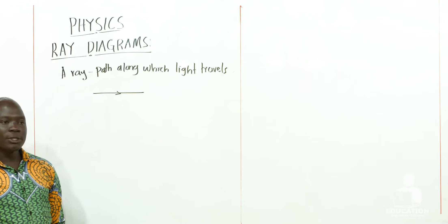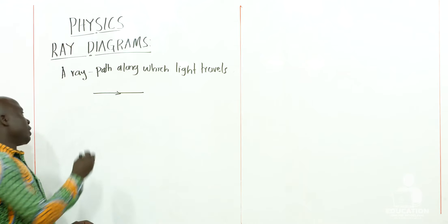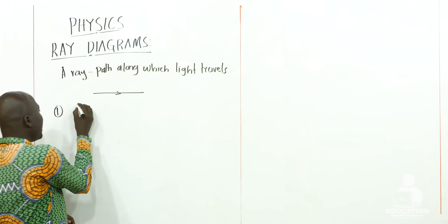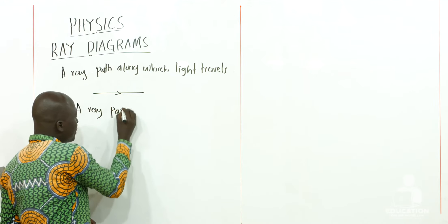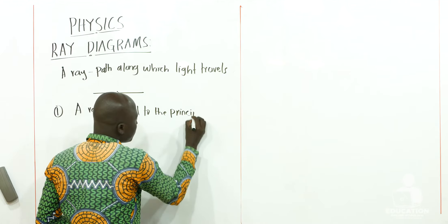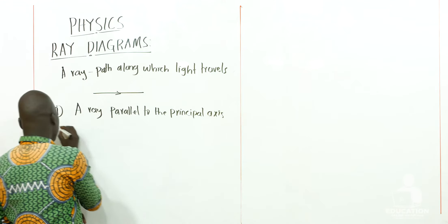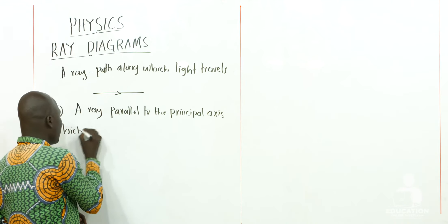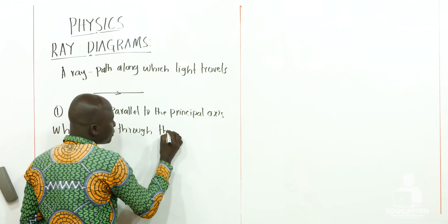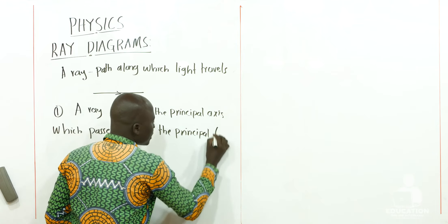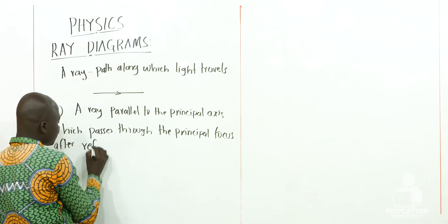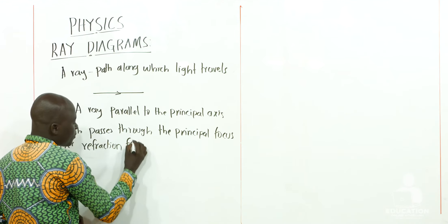For us to locate the position of an image, we have to use one or two of the following rays. The first is a ray parallel to the principal axis, which passes through the principal focus after refraction from the lens.